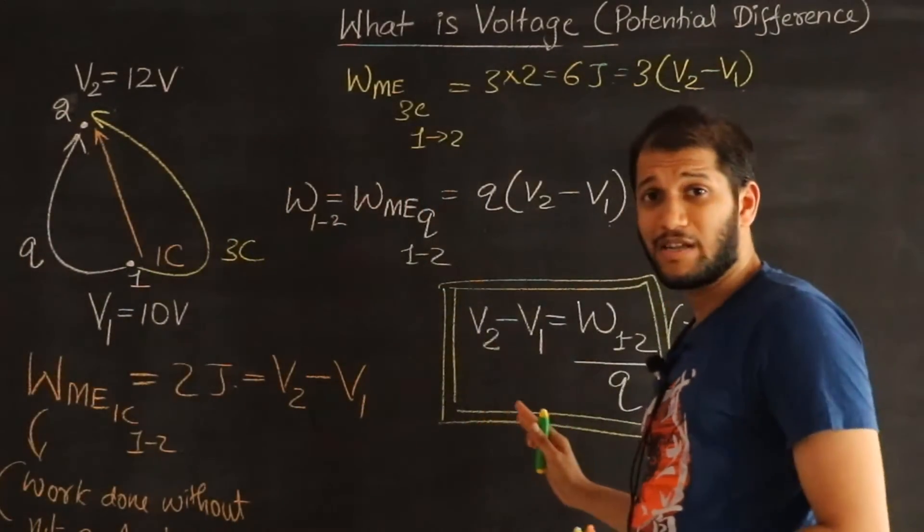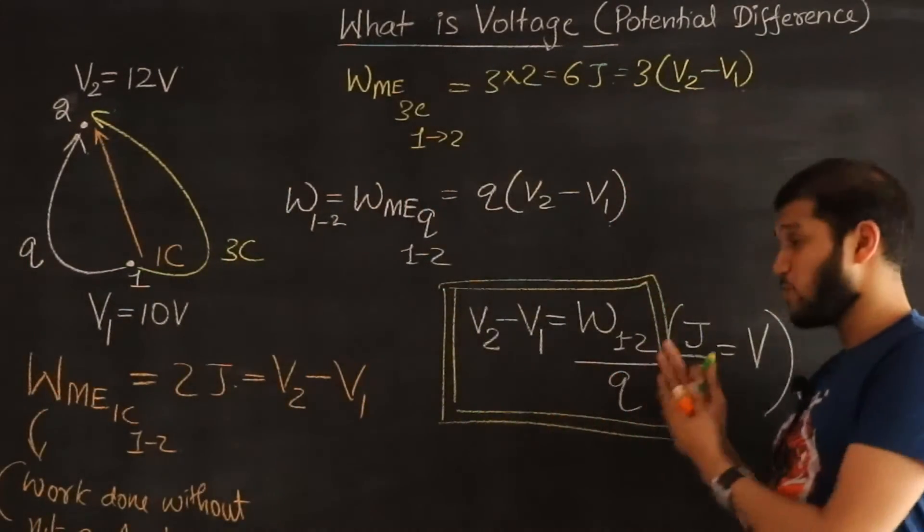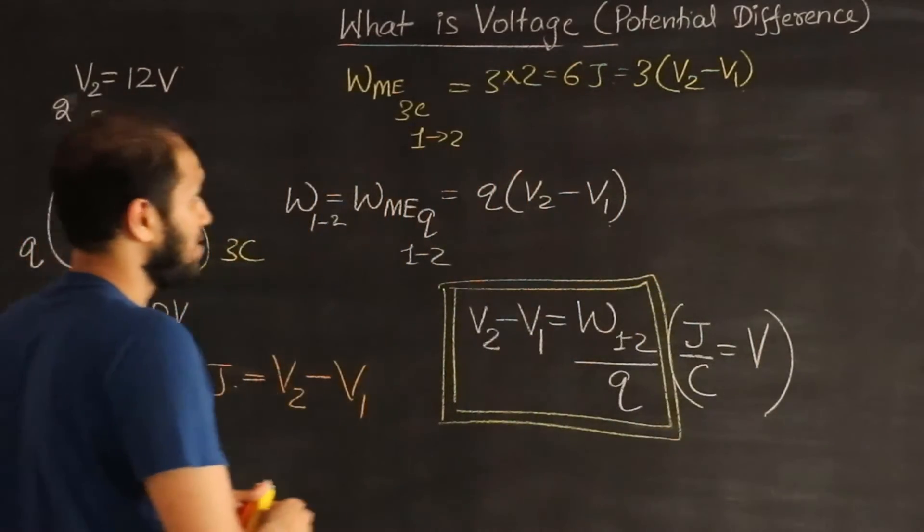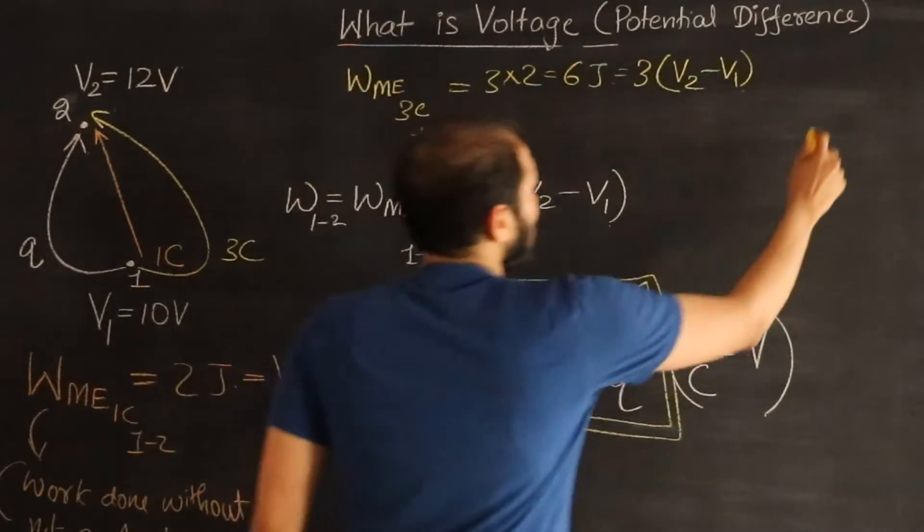Property number one about potential is that since it depends on work, it must be a scalar quantity. So voltage, I'm going to write that over here.